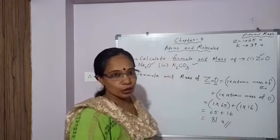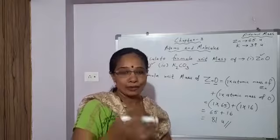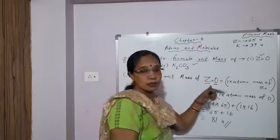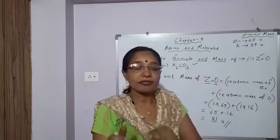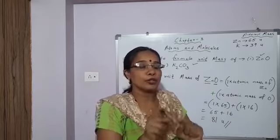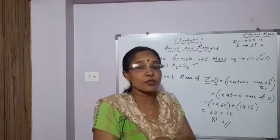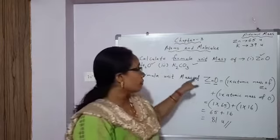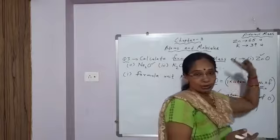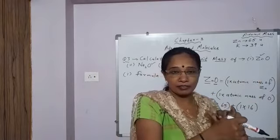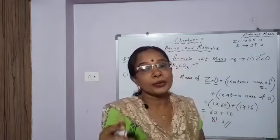So students, the calculation of molecular mass and formula unit mass is done the same way. For molecular mass, you add up the atomic masses of atoms of different elements present in one molecule of the substance. For formula unit mass, you add up the atomic masses of atoms of different elements present in one formula unit of the compound. The term formula unit mass is used for ionic compounds, where one atom is a positive ion and the other is a negative ion.